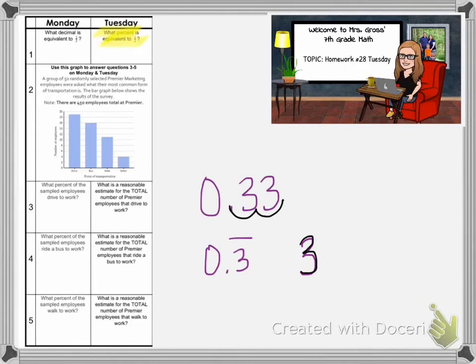You get 33.3 repeating percent. That's how you convert the decimal to a percentage.